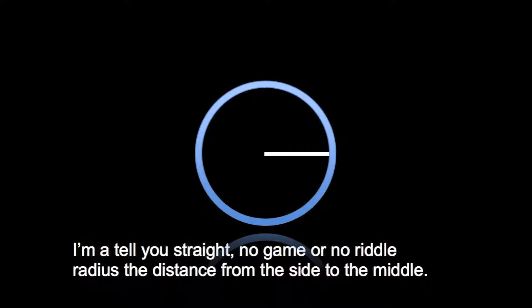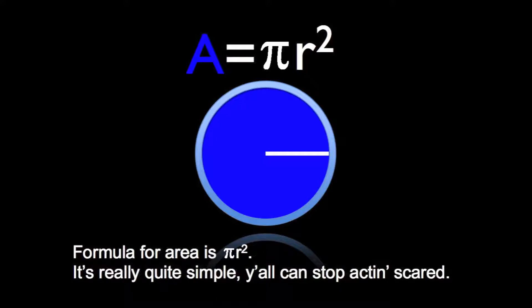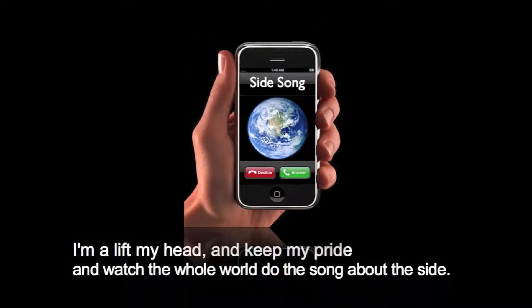Now let's tell you straight, no game or no riddle. Radius the distance from the side to the middle. When we left our area, it's pi, I swear. It's really quite simple, y'all can stop after. Stand, I'ma lift my head and keep my pride and watch the whole world do the song about the side.